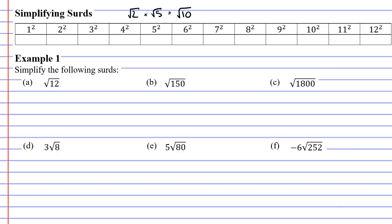The second concept is known as a perfect square. We have a table with all the numbers from 1 through to 12, and we're going to square them all. So 1 squared is 1, 2 squared is 4, 3 times 3 is 9, 4 times 4 is 16, and so on.